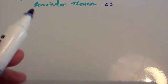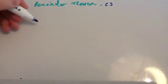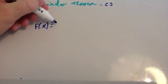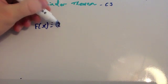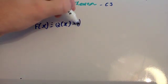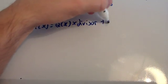In this video we're going to look at the remainder theorem, and particularly for C3. We're going to be looking at the remainder theorem for doing division rather than C2 where you're just finding out the remainder. The remainder theorem is: f of x is equivalent to q of x times the divisor plus the remainder.